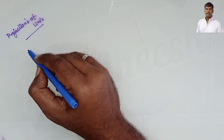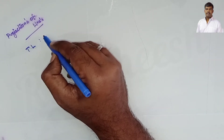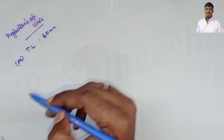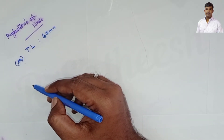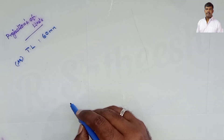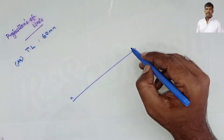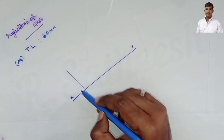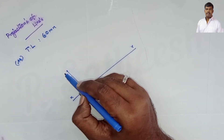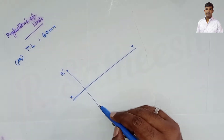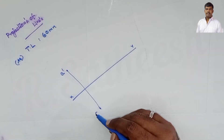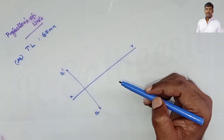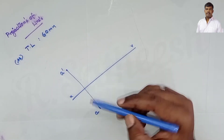The true length of the given line AB is 60mm. For end A: draw the XY reference line and draw one perpendicular line - end A is 50mm above HP from XY, so mark A-dash at 50mm. Also 50mm in front of VP, so both are 50mm above HP and 50mm in front of VP.